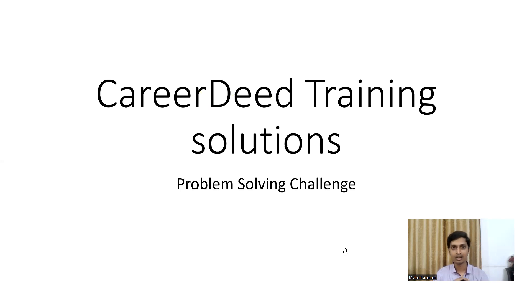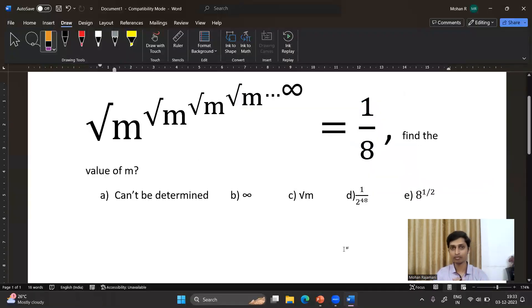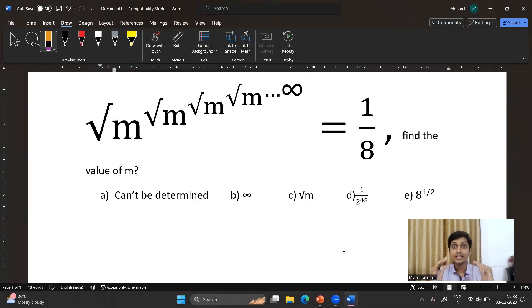Today I came up with that kind of question — a recurring algebraic expression. Here you can see the question: it is the square root of m, raised to the power of the square root of m, raised to the power of the square root of m, and so on up to infinity, equal to 1/8. Find the value of m.